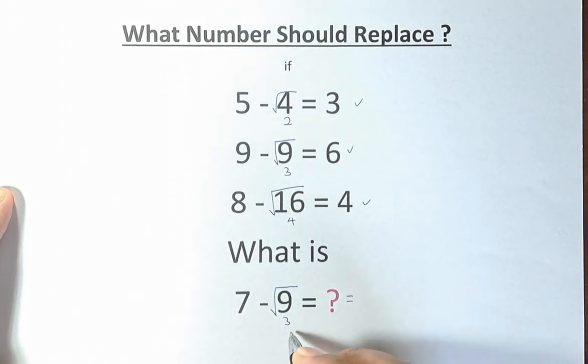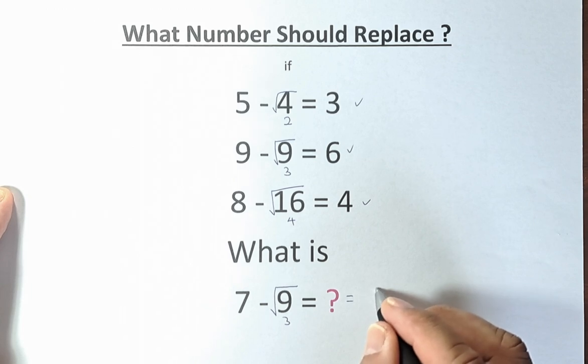The question mark is 7 minus 3, or the square root of 9, and the answer is 4.